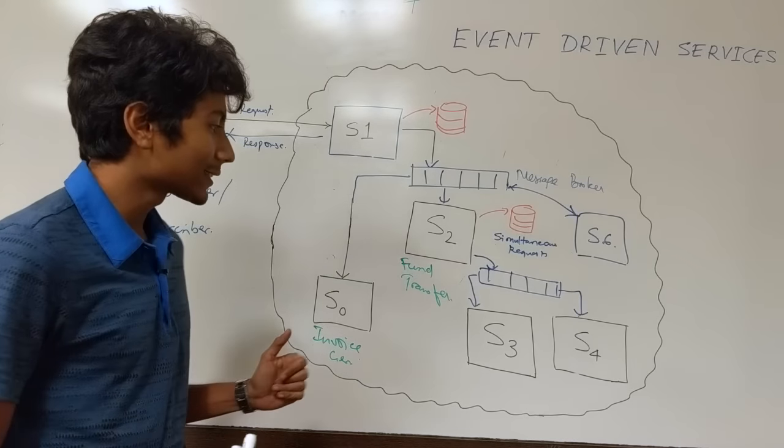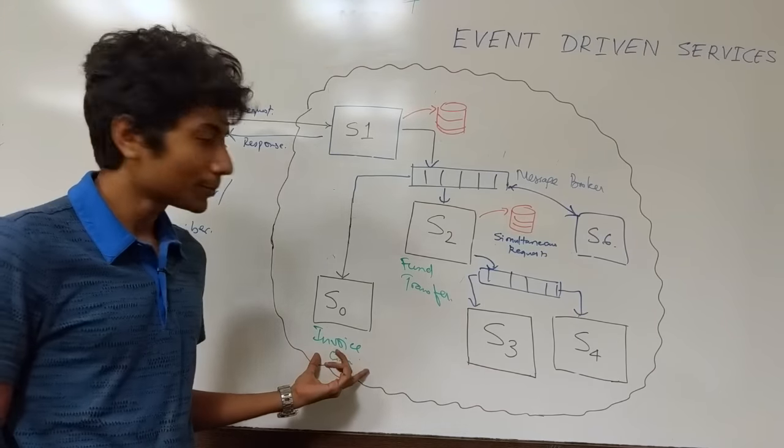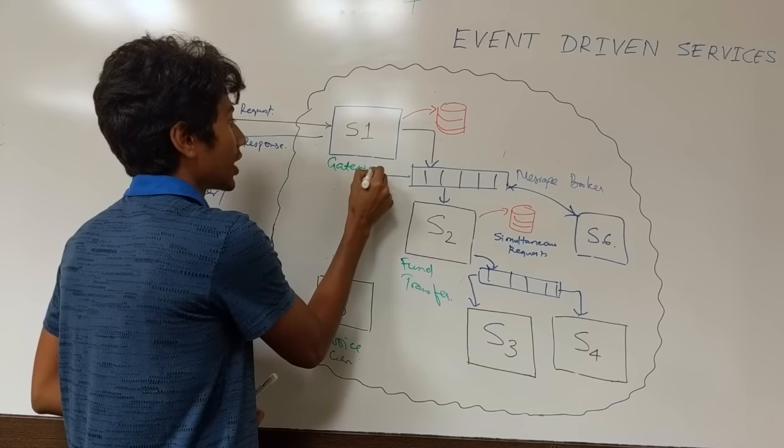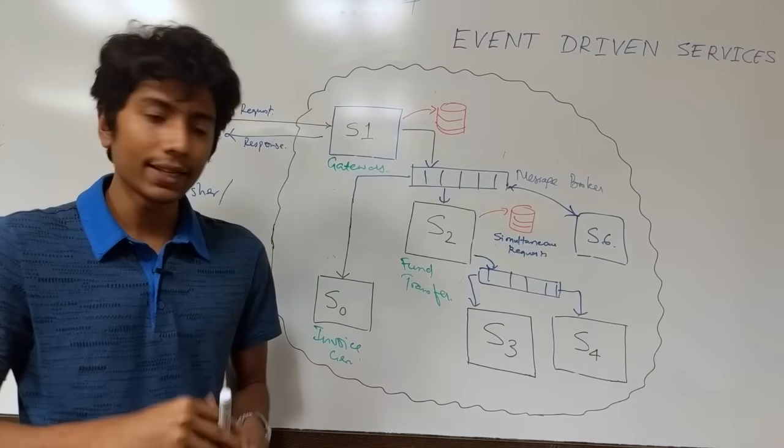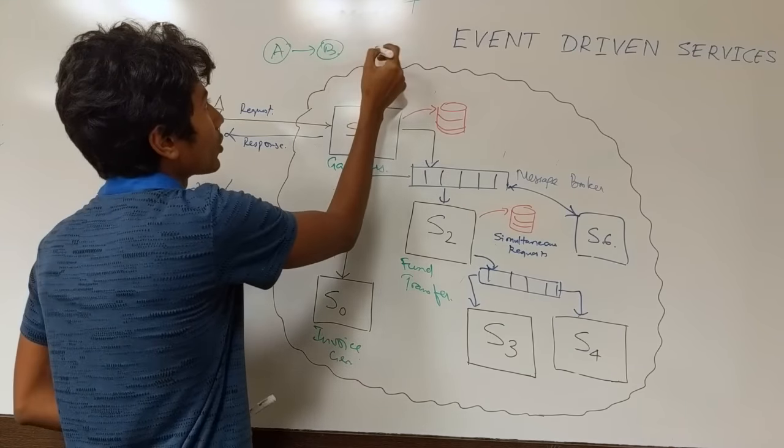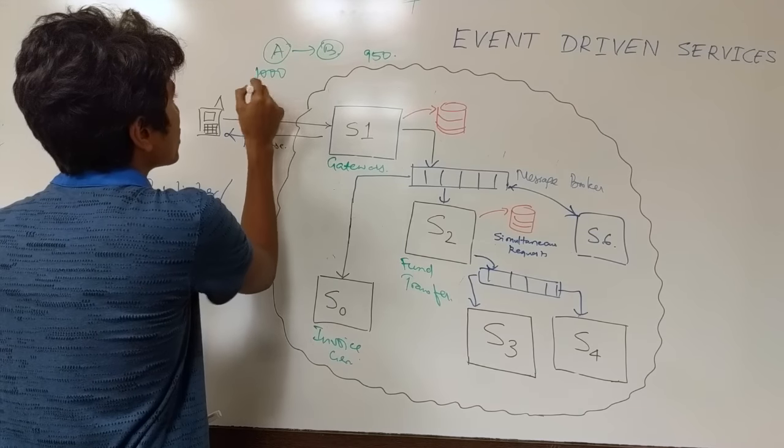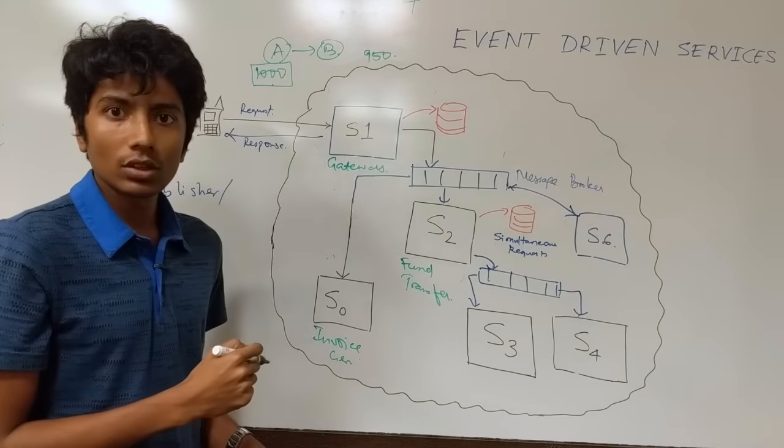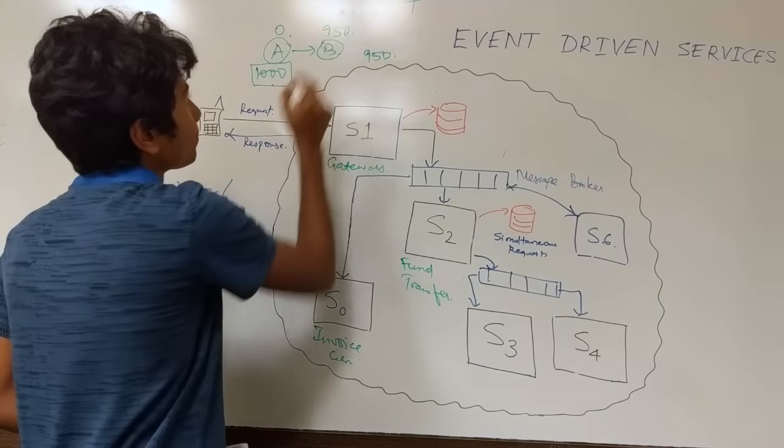Talking about the disadvantages of this service, let's get to a financial system which requires a lot of consistency. Let's say you have an invoice generator and you have a fund transfer service, and S1 is a gateway. So the gateway does nothing, it just processes the message and then sends it to S2 and S0. So you get a request from the client saying that please transfer my funds from account A to account B and the amount that I want to transfer is 950. The initial amount in account A is 1000. So the bank is going to charge 50 rupees for this transaction as a commission. So after this transaction A should have 0 rupees in its account and B should have 950 in it. That's the expectation.